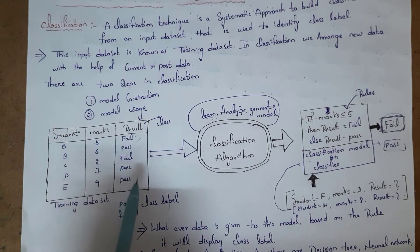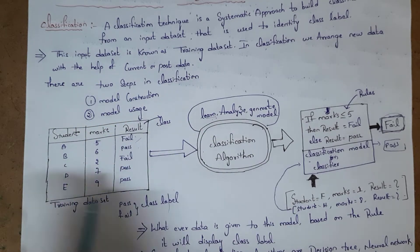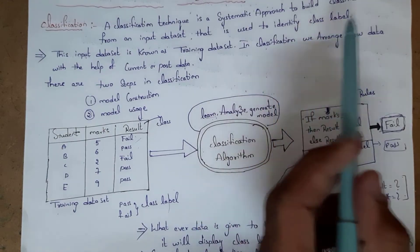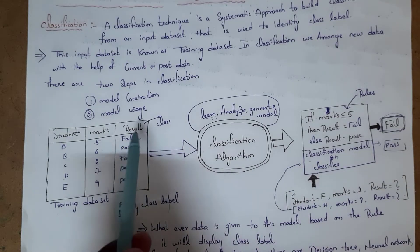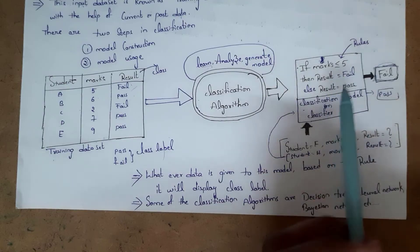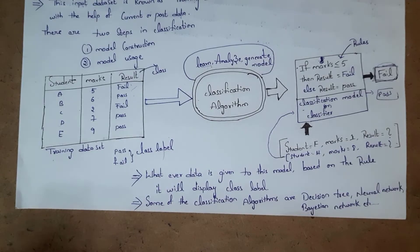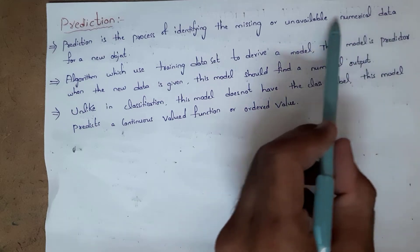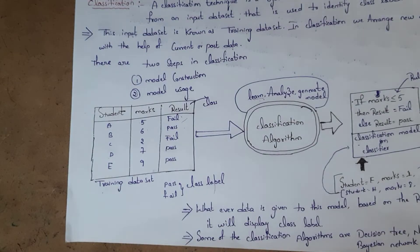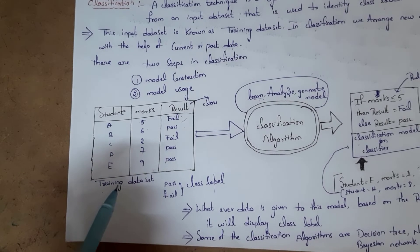This input data set is known as the training data set. The classification algorithm learns from this training data set. In classification, we arrange new data with the help of current or past data — we find the new result with the help of past results. Based on the rules, the model generates a class label. Some classification algorithms are decision tree, neural networks, etc.